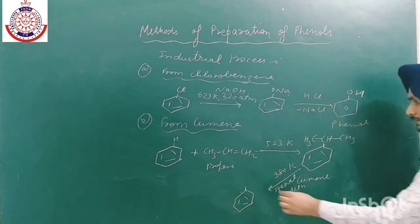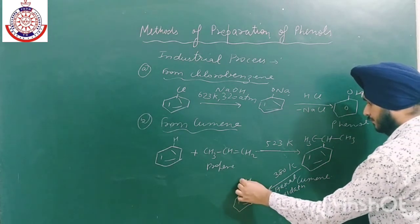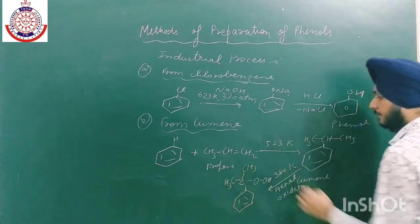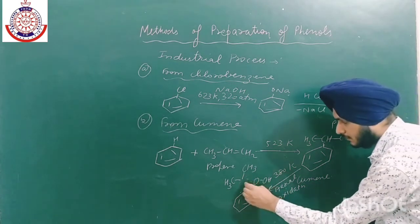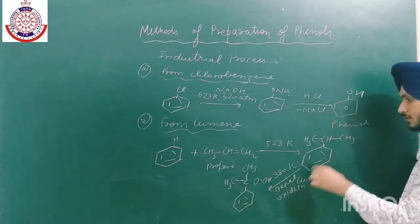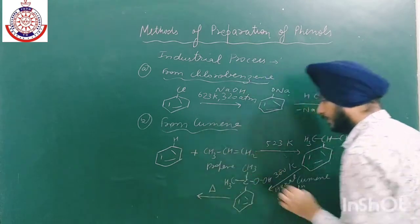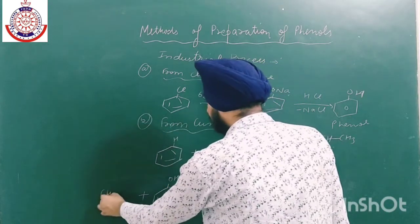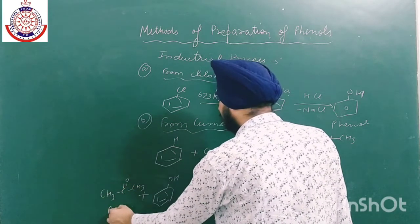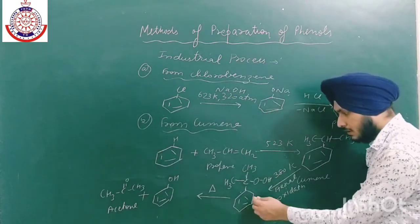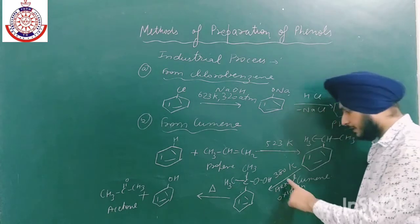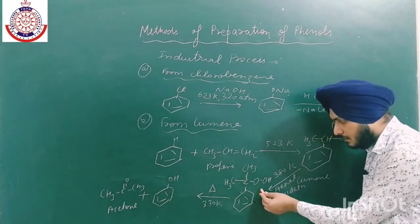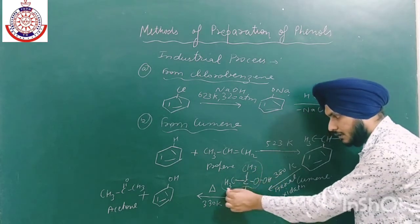By aerial oxidation we get oxycumene — cumene hydroperoxide — where O₂ has entered into the C–H bond, giving a –C(CH₃)₂–O–OH group. The next step is heating in the presence of H₃PO₄ at an even lower temperature of about 330 Kelvin, where the O–O bond cleaves.